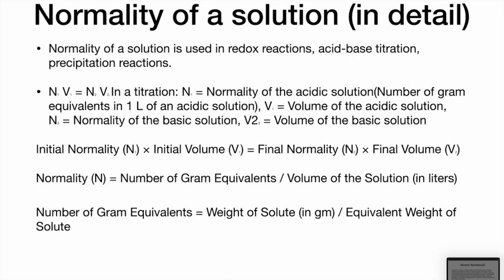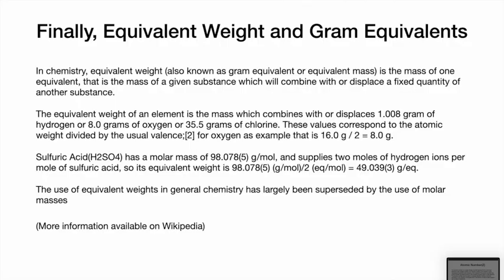Number of gram equivalents = weight of solute / equivalent weight of solute. To find N₂ we first find N₁ using N₁ = (weight of solute in grams / equivalent weight of solute) / volume of solution in liters. Equivalent weight, also known as gram equivalent or equivalent mass, is the mass of one equivalent — the mass of a substance which will combine with or displace a fixed quantity of another substance. The equivalent weight of an element combines or displaces 1.008 g of hydrogen, 8 g of oxygen, or 35.5 g of chlorine. These values correspond to atomic weight divided by the usual valence.